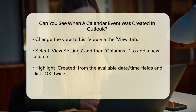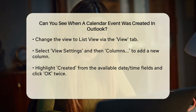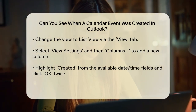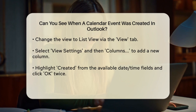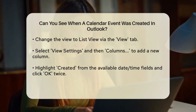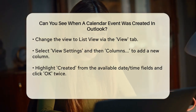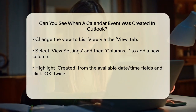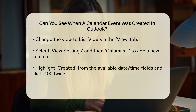To do this, click on the View tab, then select View Settings, and finally click on Columns. Here, you can add a new column labeled Created by highlighting it from the available Date Time field and clicking OK twice. This will show you the creation date for each event in your calendar list.